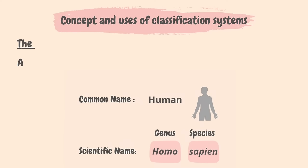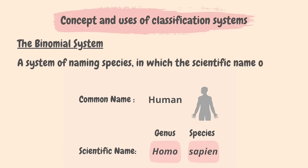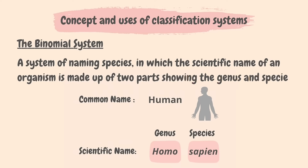We must know what a binomial system is. The binomial system of naming species is an internationally agreed system in which the scientific name of an organism is made up of two parts showing the genus and the species. A genus is a group of related species. This system allows the subdivision of living organisms into smaller groups; the species in these groups have more and more features in common, the more subdivided they get.